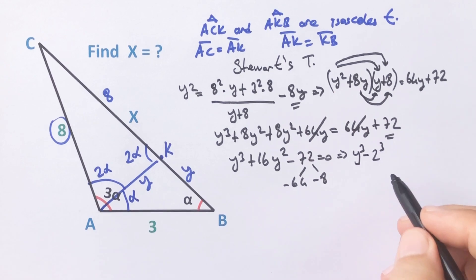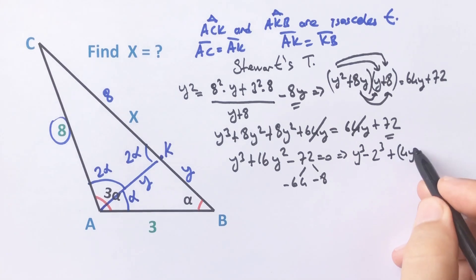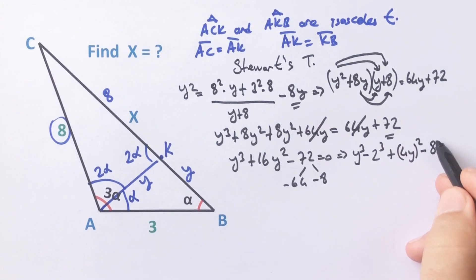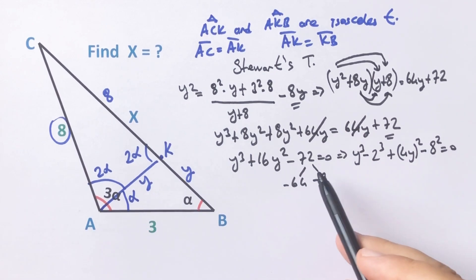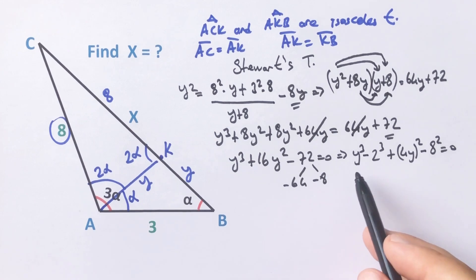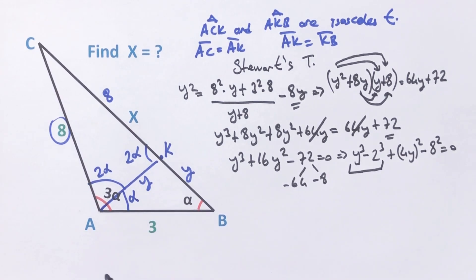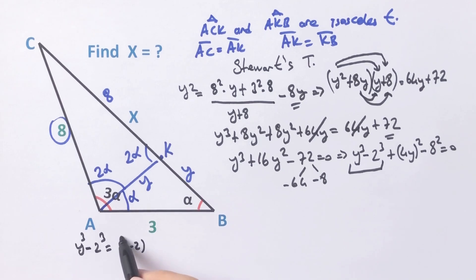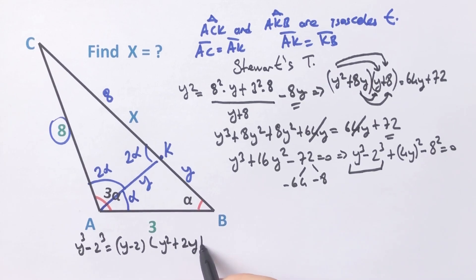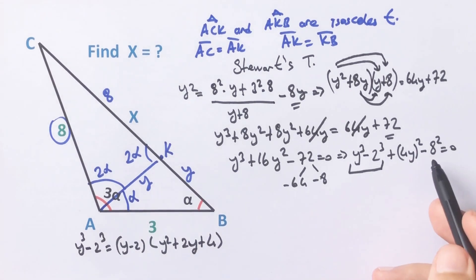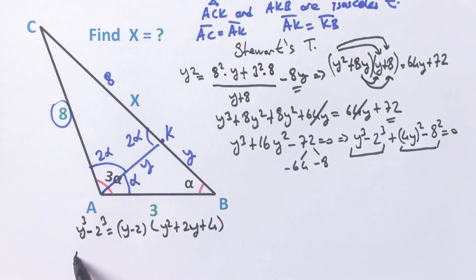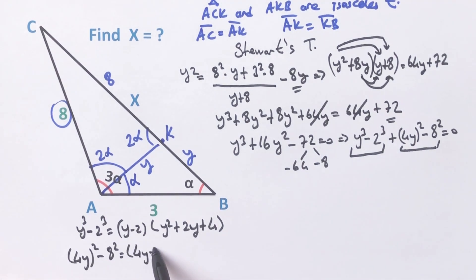Let's rearrange: y cubed minus 2 cubed plus (4y) squared minus 8 squared equals zero. Reminding the expansion: y cubed minus 2 cubed equals (y minus 2)(y squared plus 2y plus 4). And (4y) squared minus 8 squared equals (4y minus 8)(4y plus 8).